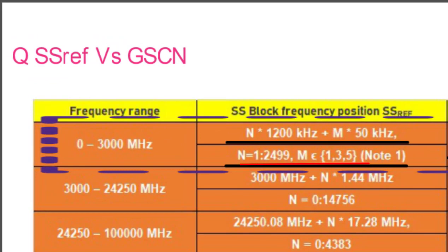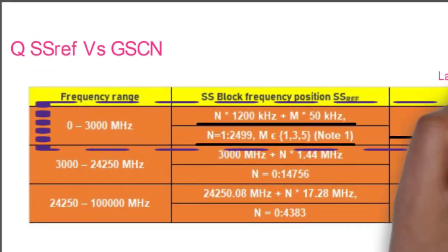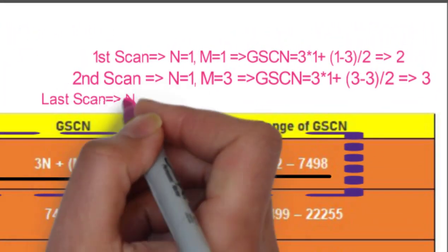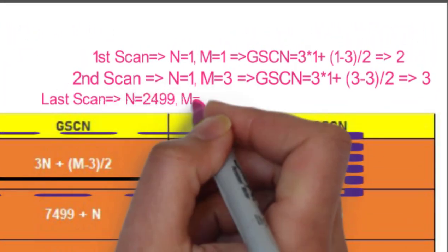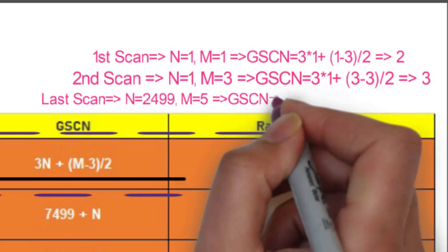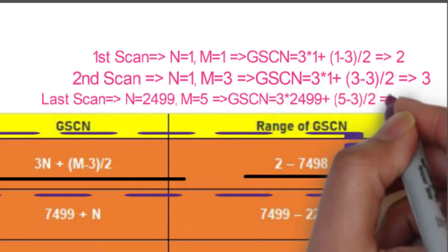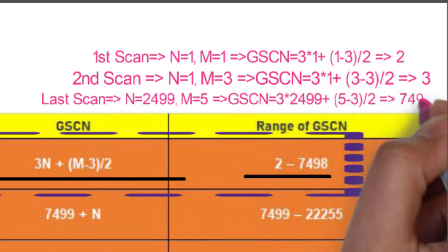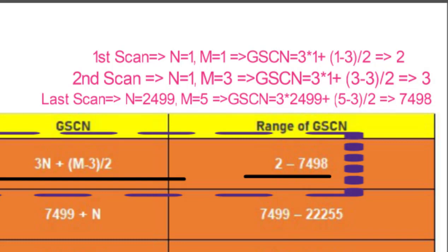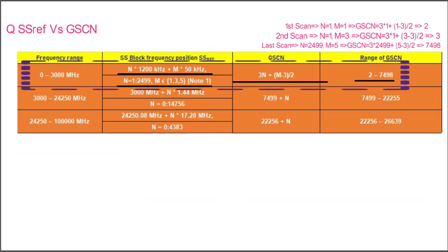If N is at its maximum value of 2499 and M is at its maximum value of 5, then GSCN = 7498. So the range of GSCN for the 0 to 3000 MHz frequency range is 2 to 7498. In the same way we can calculate the SS_ref.